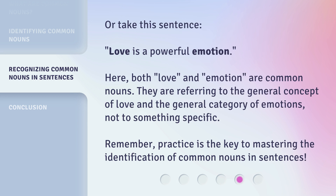Or take this sentence: 'Love is a powerful emotion.' Here, both love and emotion are common nouns. They are referring to the general concept of love and the general category of emotions, not to something specific. Remember, practice is the key to mastering the identification of common nouns in sentences.